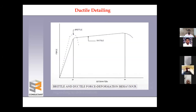The deformation versus force graph clearly shows that brittle material fails before yielding, whereas ductile material takes much longer to fail. This ductility offers great time to either repair the structure or to evacuate if the structure is going to collapse.